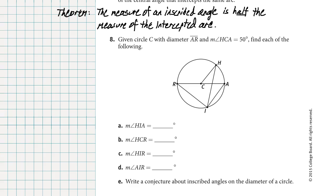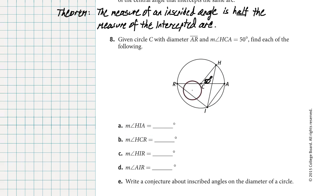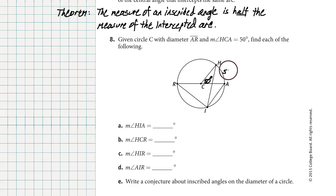Let's go to problem 8 and do some samples. Given circle C has a diameter segment AR, and the measure of angle HCA is 50 degrees — let's label angle HCA as 50 degrees. I'm going to identify angle HCA as a central angle. Its intercepted arc is therefore 50 degrees.